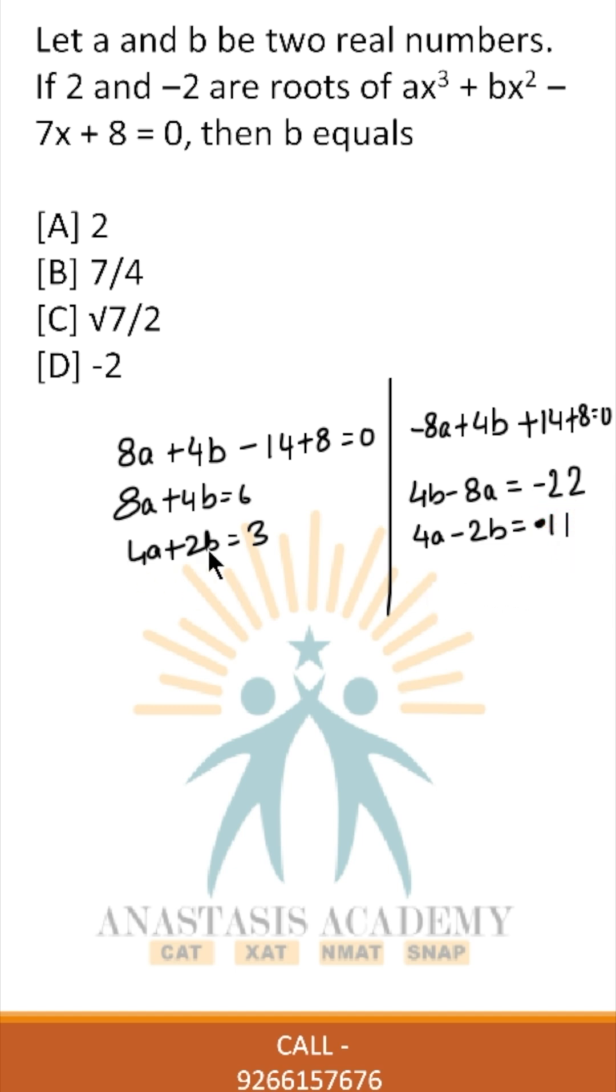4a - 2b will be equal to 3. We need the value of b eventually.